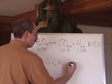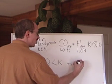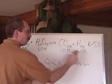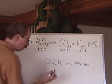And so when Q is less than K, the reaction shifts to the right to make more of these. So you put the pluses on this side and the minuses on this side.